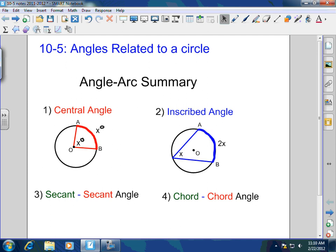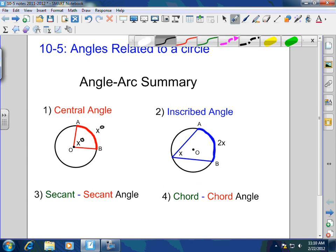Inscribed angle. An inscribed angle, the angle itself, is half of the arc measure. Or vice versa. The arc measure is twice the angle measure. All of these have been reviewed so far.